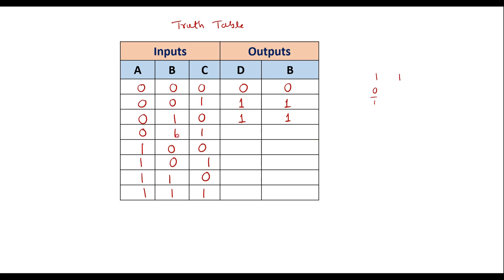For 0,1,1: 0 minus 1 generates difference 1 and borrow 1. Then 1 minus 1 will be 0, so difference is 0 and borrow is 1. For 1,0,0: 1 minus 0 gives difference 1 and borrow 0. For 1,0,1: 1 minus 1 is 0, so difference is 0. For 1,1,0: difference is 0 and borrow is 0. For 1,1,1: difference is 1 and borrow is 1, since 1 minus 1 is 0, then 0 minus 1 generates difference 1 and borrow 1.